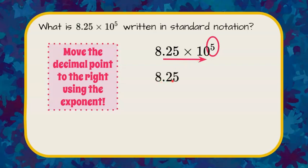So rewriting this, we have 8.25, and I'm going to add 3 zeros so that now I have 5 decimal places that I can move my decimal point to.